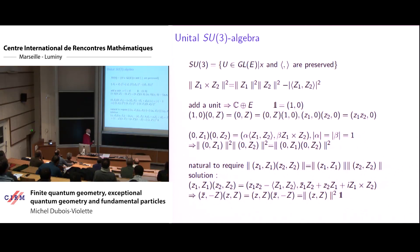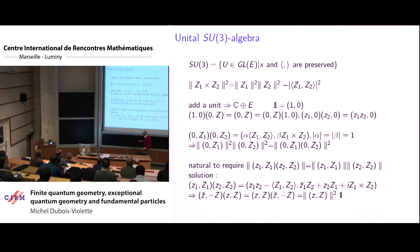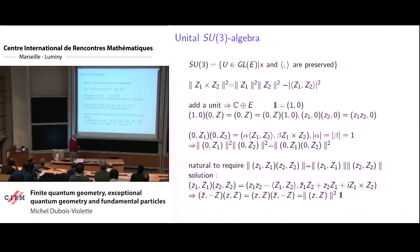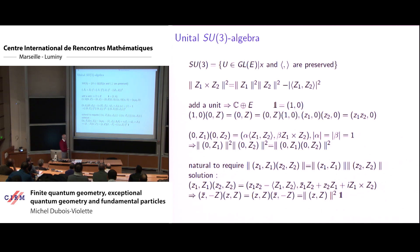If I require this formula, there is a solution, but it is not unique since I can choose alpha and beta as I want. I could have chosen the product to be bilinear or anti-bilinear. This product satisfies all what I want, and now what you observe is that there is an involution on this product.